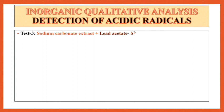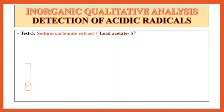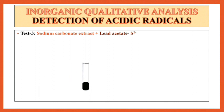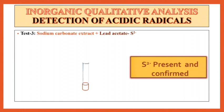Next test is test 3 for the detection of S²⁻ radical. For that, take sodium carbonate extract. To this sodium carbonate extract, add lead acetate drop wise and shake it well. If a black PPT is observed, then to this black PPT add HNO3 drop wise. Shake it well — it is soluble in HNO3. So S²⁻ is present and confirmed.